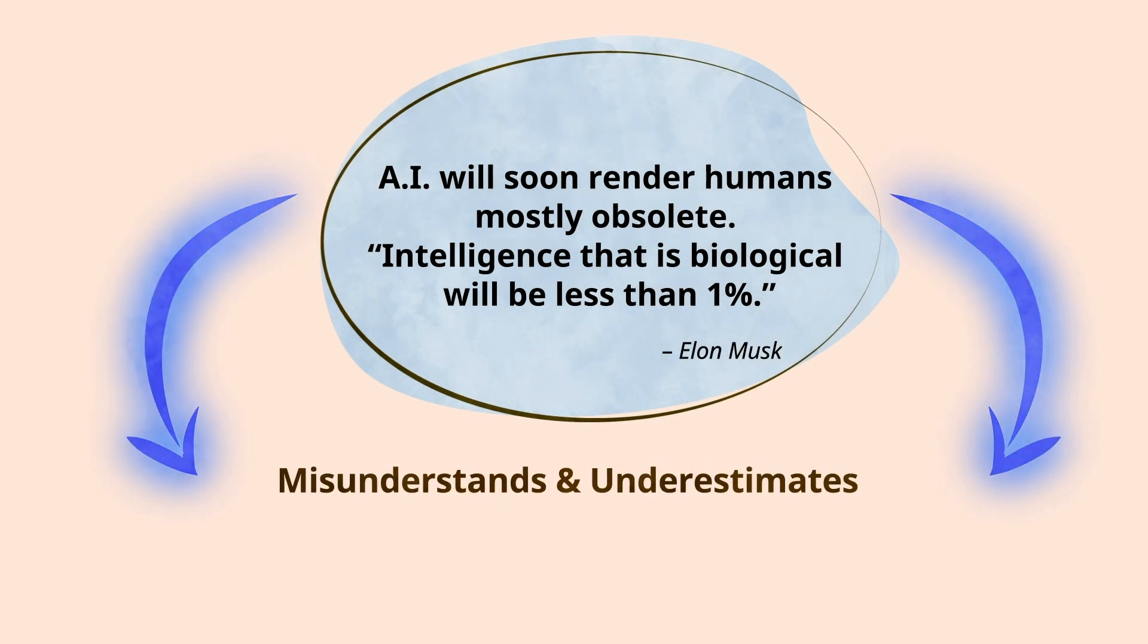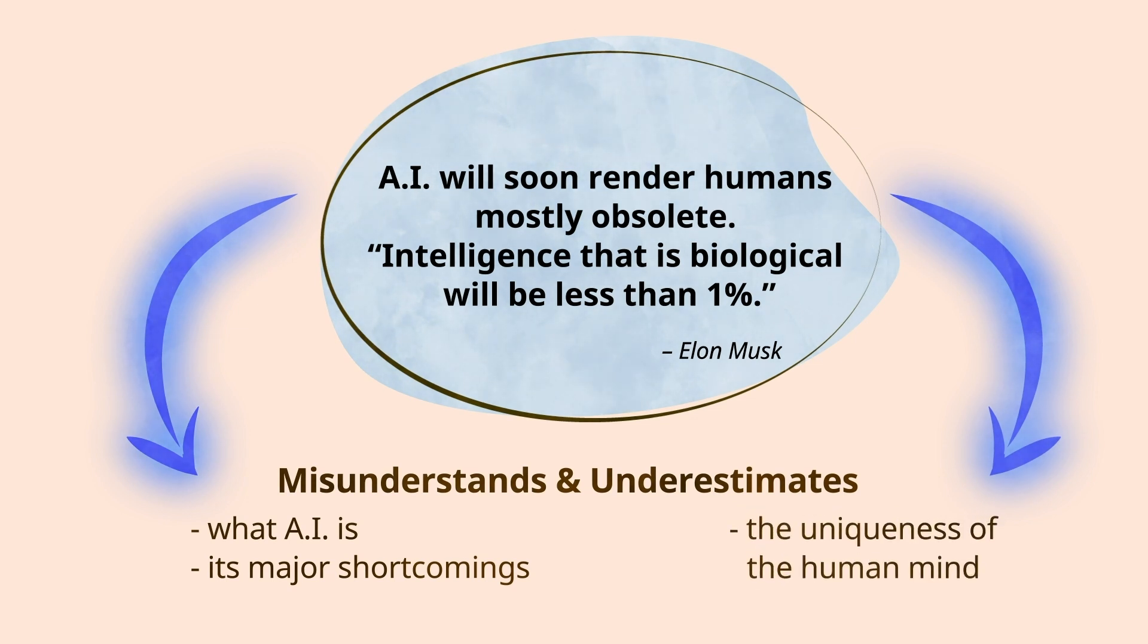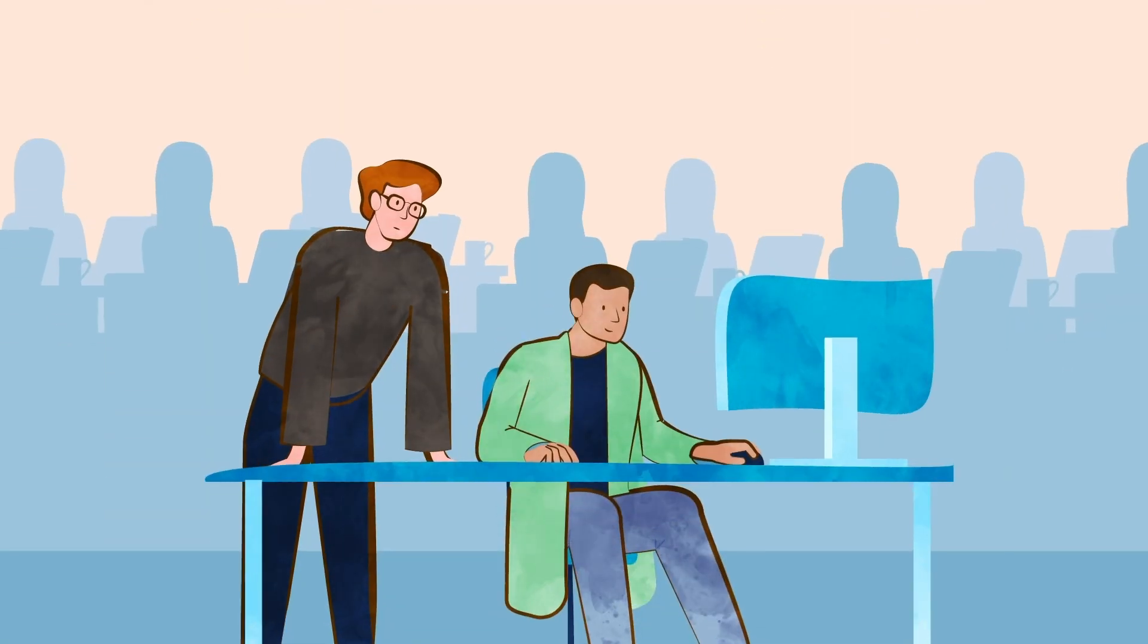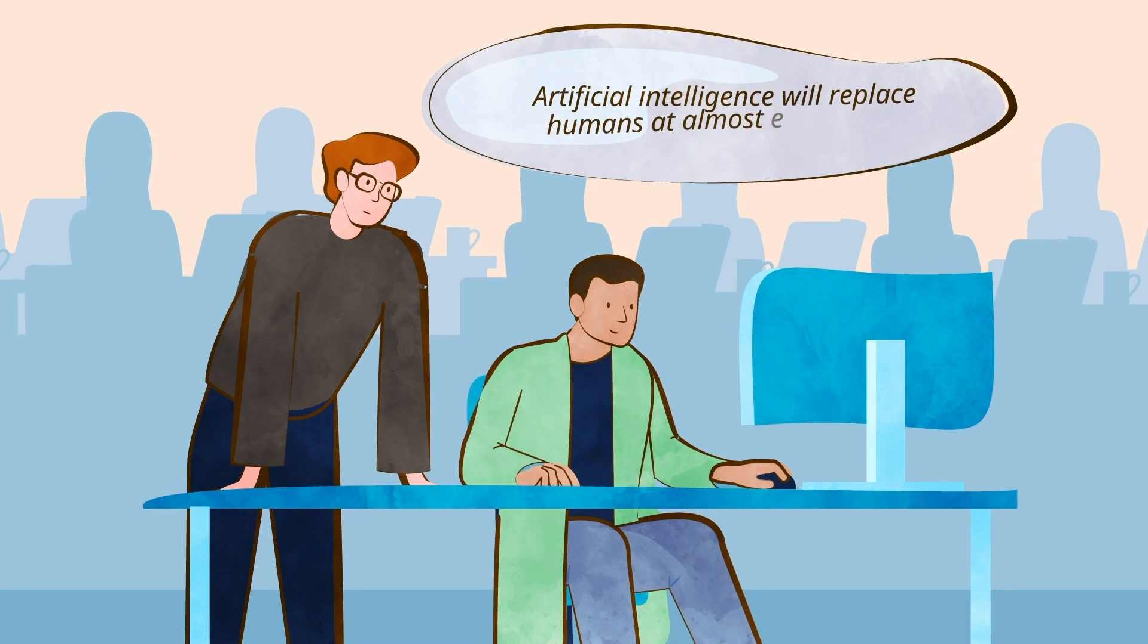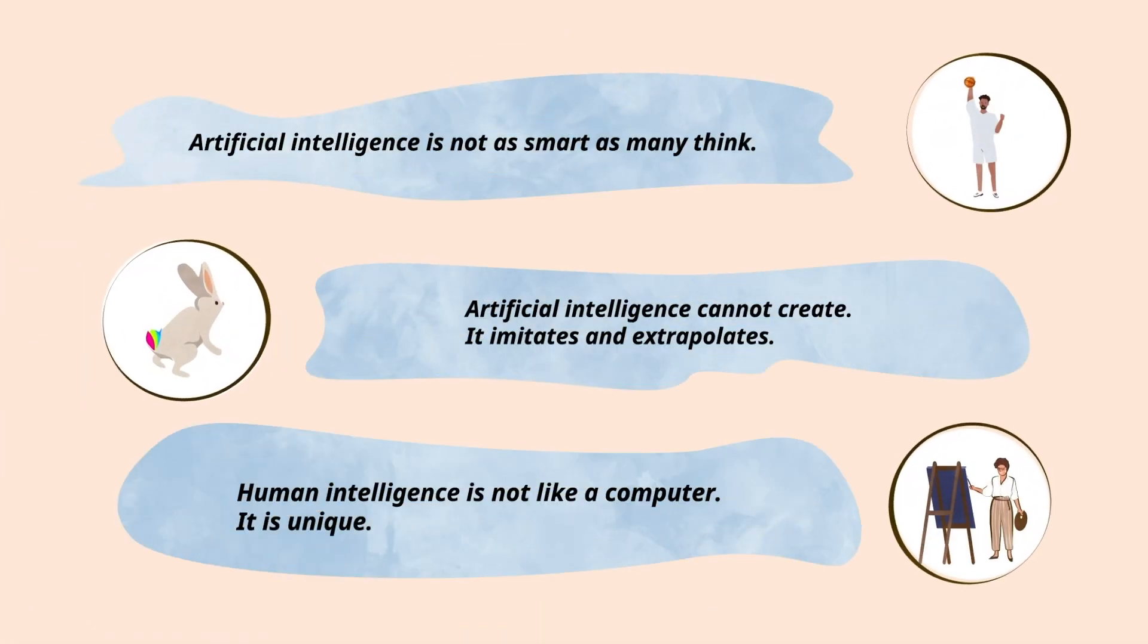While artificial intelligence has shown remarkable progress, sensational claims about AI replacing humans misunderstand what AI is and underestimate its major shortcomings. They also misunderstand and underestimate the uniqueness of the human mind. So, the next time someone says artificial intelligence will replace humans in almost everything, here are three things to remember.